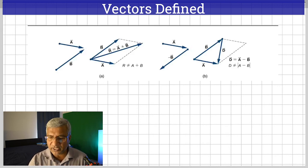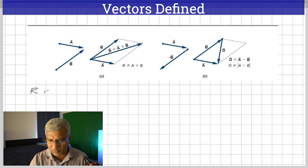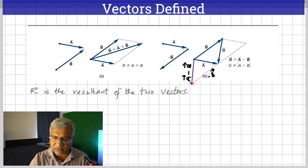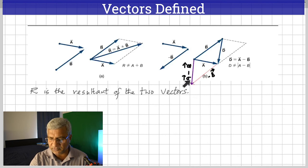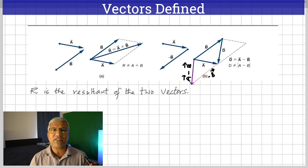So here: there's already A, then from the end of A draw negative B, and this gives A minus B. This is A, this is negative B, and this is A minus B. That's how we find the resultant of vectors — you can either add two vectors or take the difference between them in this way.